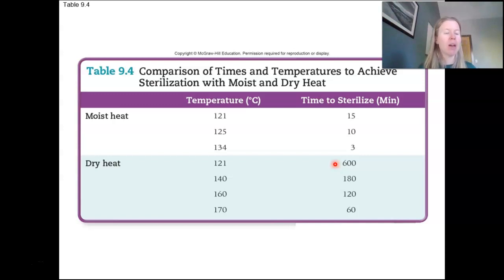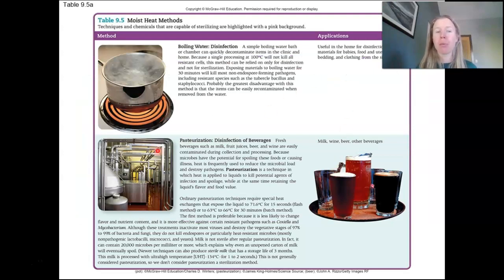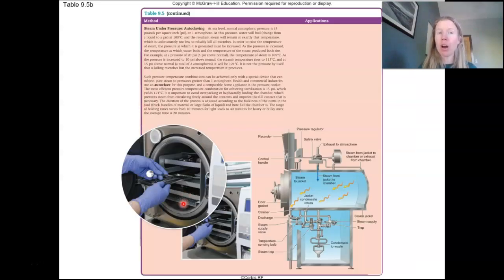But notice the dry heat. You would have to put it in dry heat. That would be like an oven for 600 minutes for 10 hours before that becomes sterilized. So under dry heat, we think about some sort of oven or an open flame. So the thing to keep in mind here is you look at that and you go, oh, moist heat is way more effective. And that is a big portion of why we use something like an autoclave.